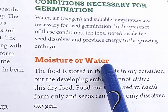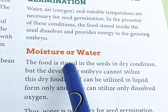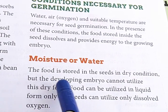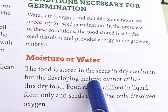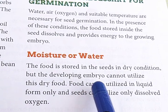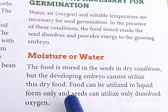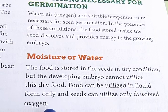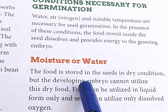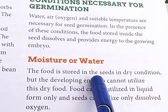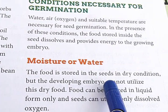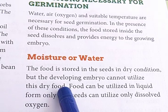Moisture or water: the food is stored in seeds in a dry condition, but the developing embryo cannot utilize this dry food. Food can be utilized in liquid form only. Normally food is stored in the cotyledons as a solid, but the embryo is unable to utilize this dry food.